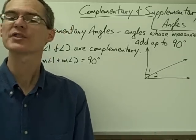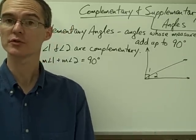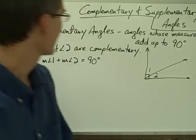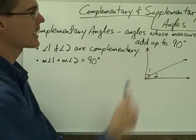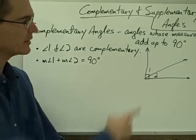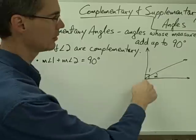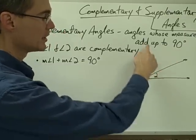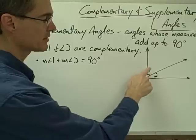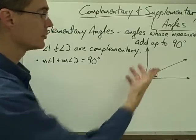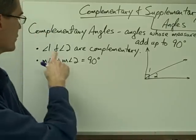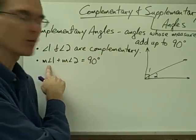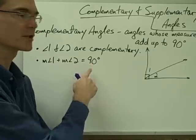In this video we're going to use our four-step problem-solving procedure to do some problems involving complementary and supplementary angles. Complementary angles are angles whose measures add up to 90 degrees. In this picture I've got a right angle divided into two angles, angle 1 and angle 2. Since a right angle equals 90 degrees, angle 1 and angle 2 must add up to 90 degrees, which means they are complementary — that is, the measure of angle 1 plus the measure of angle 2 equals 90 degrees.